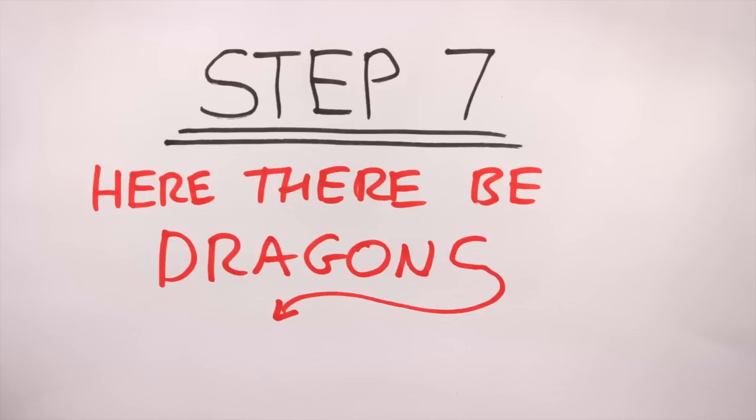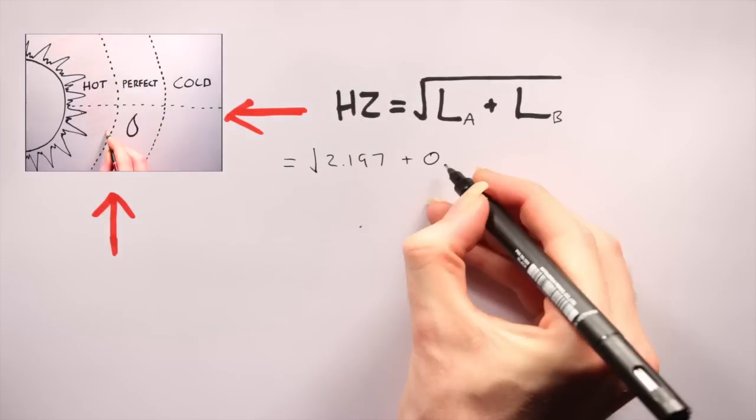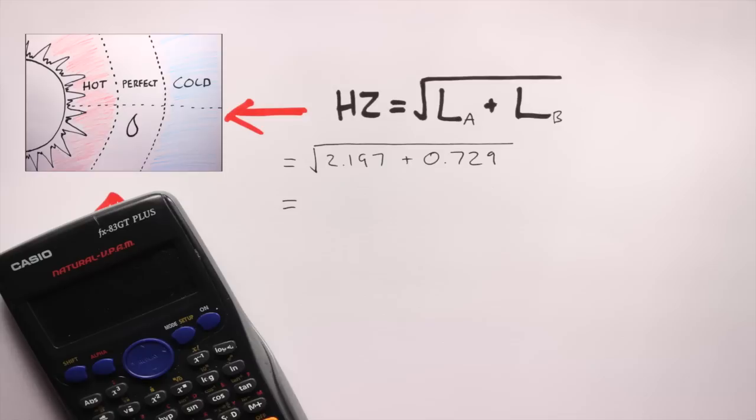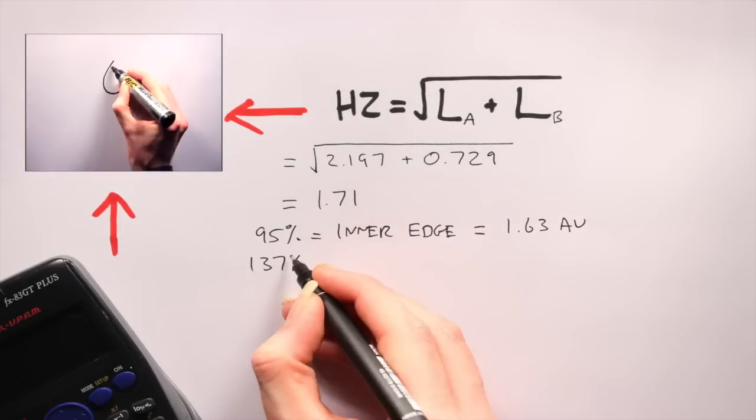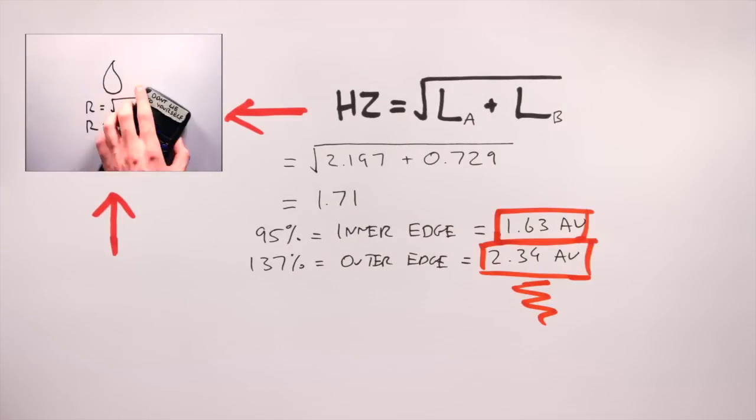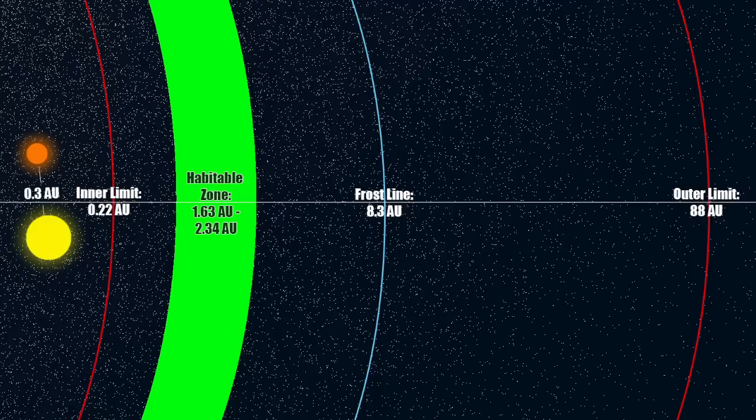Step 7, here there be dragons. Now, calculate your habitable zone. Habitable zones are covered here, but modify the equations like this to account for the additional luminosity. Hopefully, you're seeing a pattern here. The Mikkel system has a habitable zone extending from 1.63 to 2.34 AU.